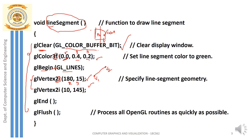Now you are ready to plot the second vertex. Again you call glVertex2i. The second x-coordinate and y-coordinate are (10, 145). You are done with the two endpoints and ready to draw the line. End the list of vertices by calling glEnd. Whenever there is a glBegin there must be a glEnd. You now have a single line drawn with two endpoints V1 and V2. After glEnd, do not forget to call glFlush.